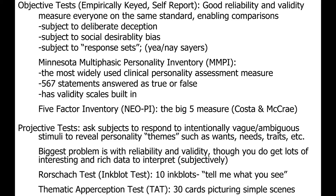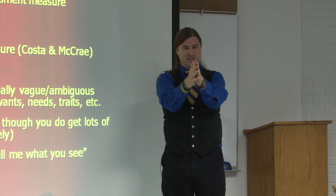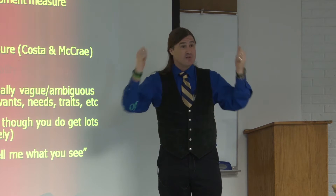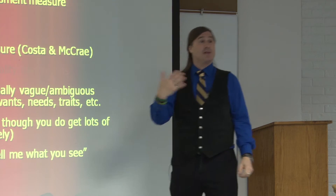Back then it was 10 inkblots in black and white; there are more of them now and they're in color. You get this blot of ink — what does it mean? It doesn't mean anything. By definition it's ambiguous, it's vague, it's a random shape. It's symmetrical because the way you make them is you put some ink on paper, fold it up, it splats however it does, you fold it back out, and that's your stimulus to be interpreted.